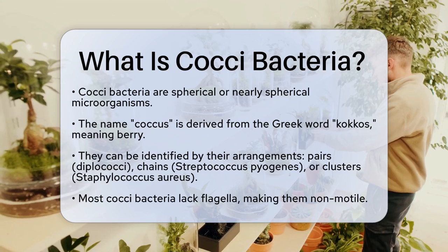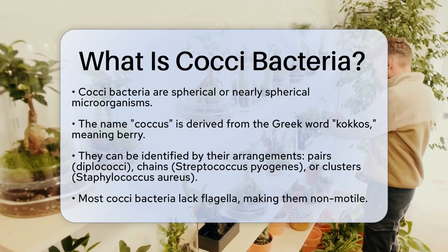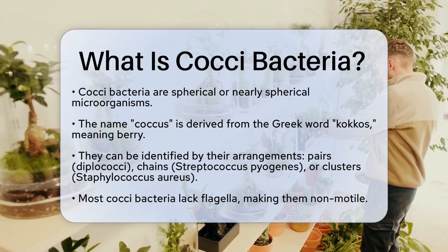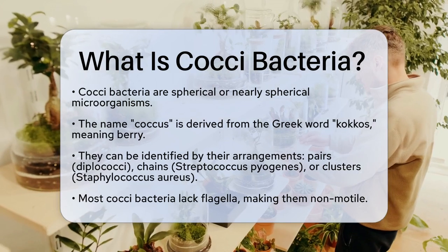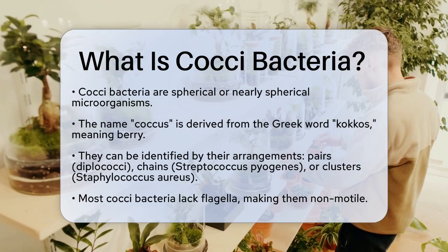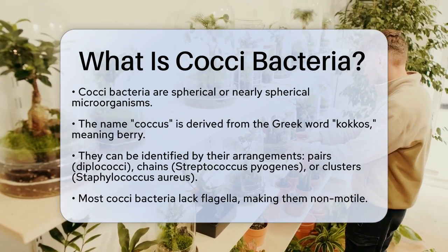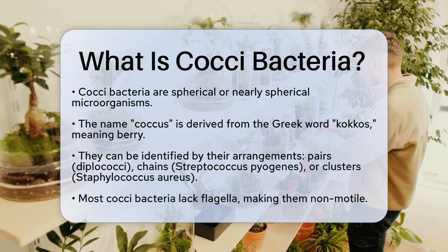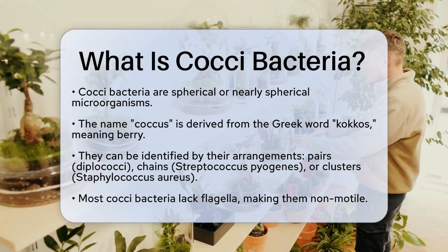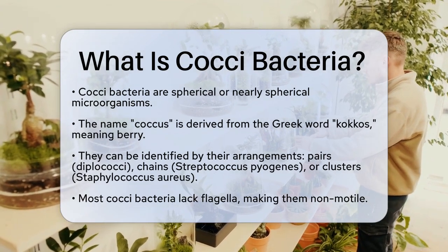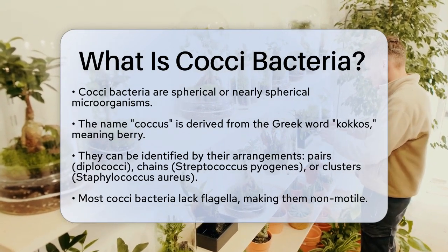Cocci bacteria are a type of microorganism that has a spherical or nearly spherical shape. The term coccus comes from the Greek word kokos, meaning berry, which is a fitting description given their round appearance. These bacteria can be found in various arrangements, which help in their identification.